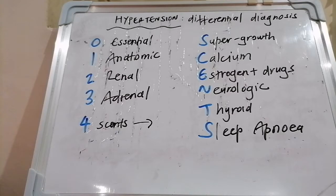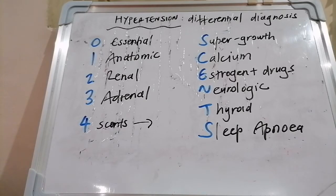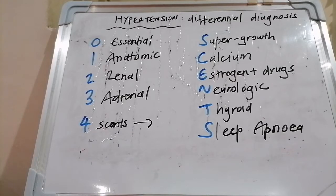The definition of hypertension is split basically into stage one and stage two. Stage one hypertension is systolic blood pressure between 140 and 159 mmHg or diastolic between 90 and 99. Stage two is systolic exceeding 160 and diastolic exceeding 100.